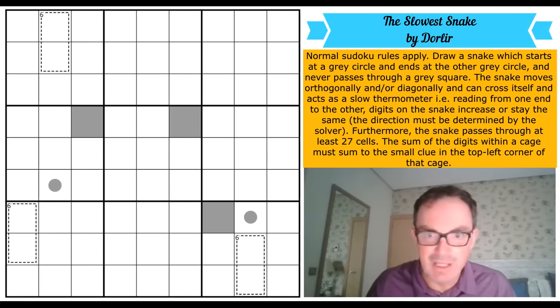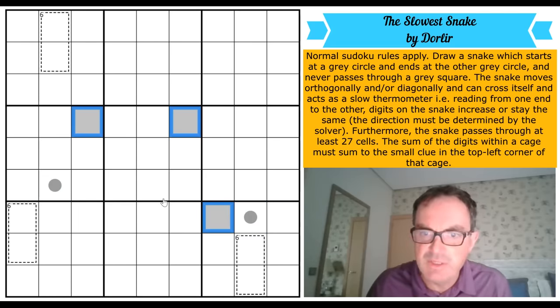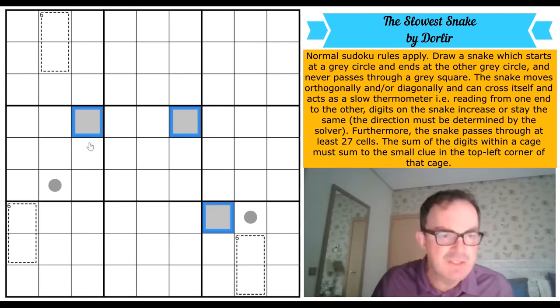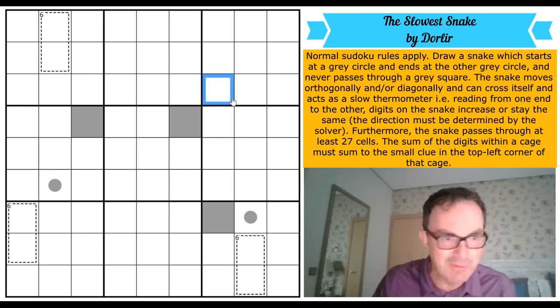I will read the rules. Normal Sudoku rules apply. Draw a snake which starts at a gray circle and ends at the other gray circle, and never passes through a gray square. The snake moves orthogonally and or diagonally, and this is horrible - can cross itself and acts as a slow thermometer. Reading from one end to the other, digits on the snake increase or stay the same. The direction must be determined by the solver. Furthermore, the snake passes through at least 27 cells. The sum of the digits within a cage must sum to the small clue in the top left corner of that cage.